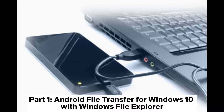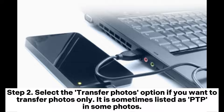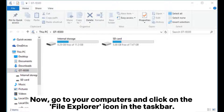Part 1: Android file transfer for Windows 10 with Windows File Explorer. Step 1: After connecting your phone to the computer with a USB cable, swipe up and select the option labeled USB connection. Step 2: Select the transfer photos option if you want to transfer photos only — it is sometimes listed as PTP in some phones.